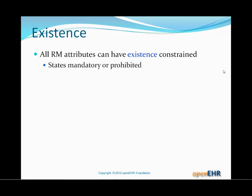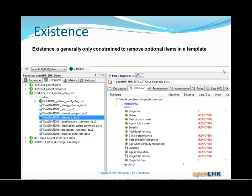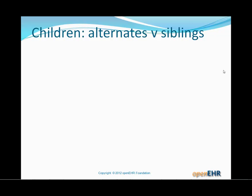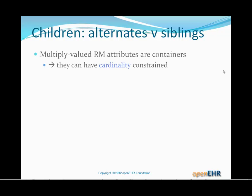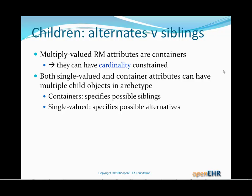All reference model attributes can have existence constrained — that simply states mandatory or prohibited. It's typically only constrained to remove optional items in a template, or to mandate items, meaning a whole tree under a certain attribute. For multiply-valued (container) reference model attributes, cardinality can be constrained. Between a single-value and a container attribute, there is a meaning for multiple child objects in an archetype.